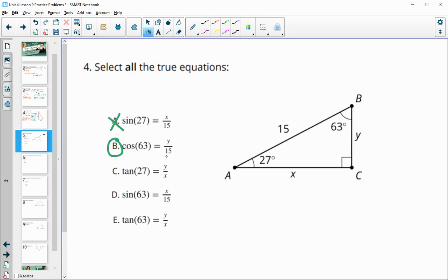C is the tangent of 27. Tangent is the opposite side, which is Y, over the adjacent side, which is X. So tan 27 equals Y over X is a true statement.